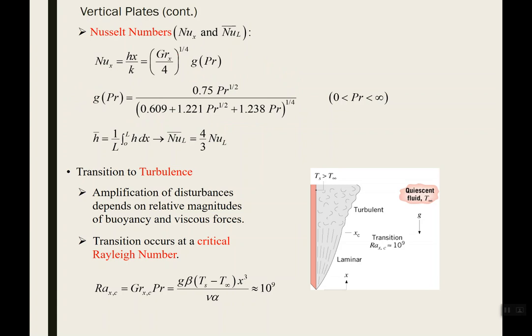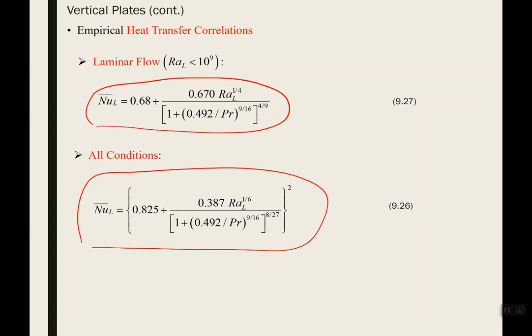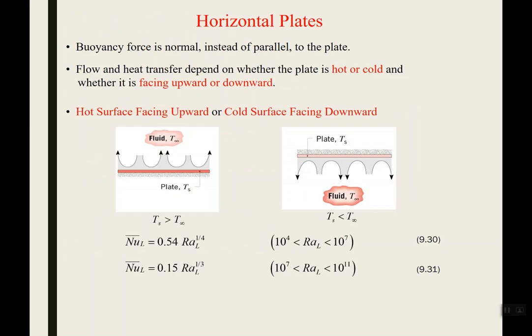We still deal with laminar or turbulent flow, except now it's determined by the Rayleigh number instead of the Reynolds number. A Rayleigh number of 10 to the 9th or more indicates turbulent flow; otherwise it's laminar. For laminar flow with Rayleigh number less than 10 to the 9th, use the laminar correlation for average Nusselt number over the whole plate. For turbulent flow, use the turbulent correlation — which also applies to the laminar case. Then back-solve the Nusselt number definition to get your H.